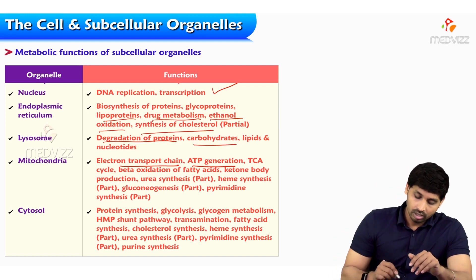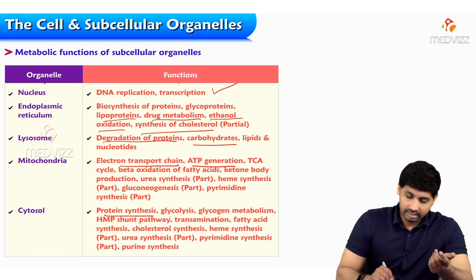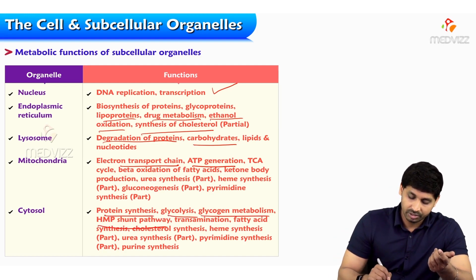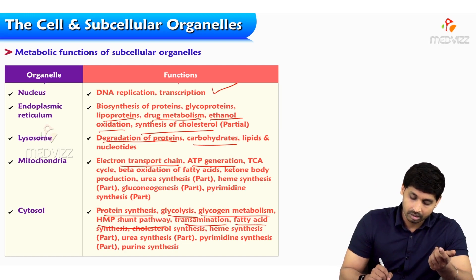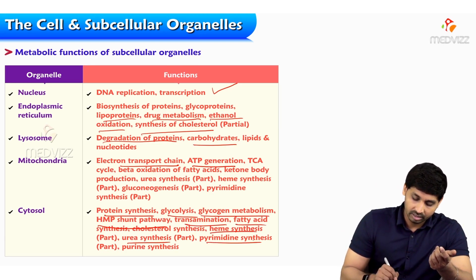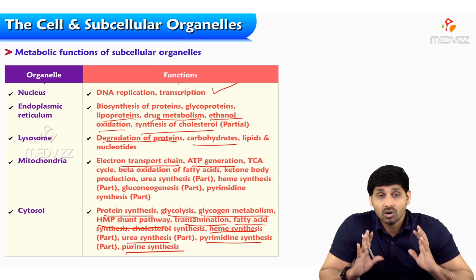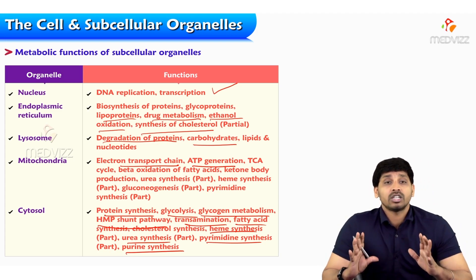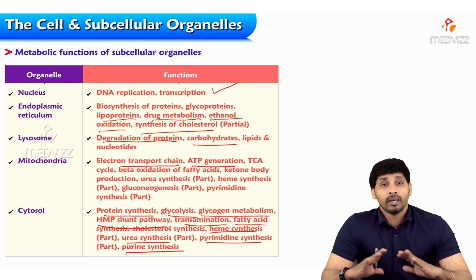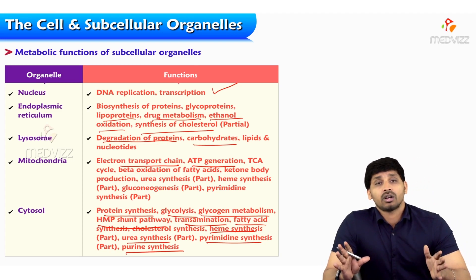Cytosol is responsible for: protein synthesis, glycolysis, glycogen metabolism, HMP shunt, transamination, fatty acid synthesis, heme synthesis, urea synthesis, pyrimidine synthesis, and purine synthesis. These are the overall functions of subcellular organelles.